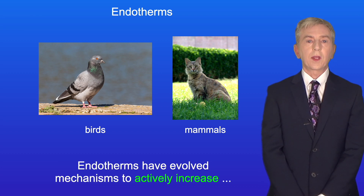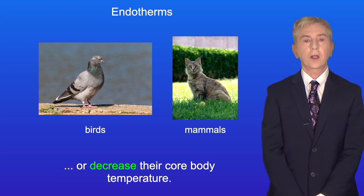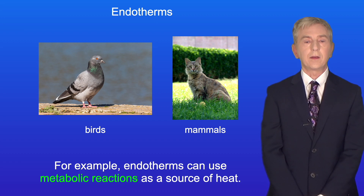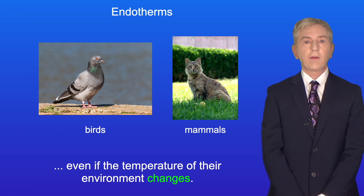Endotherms have evolved mechanisms to actively increase or decrease their core body temperature. For example, endotherms can use metabolic reactions as a source of heat. So endotherms can keep their core body temperature stable, even if the temperature of the environment changes.